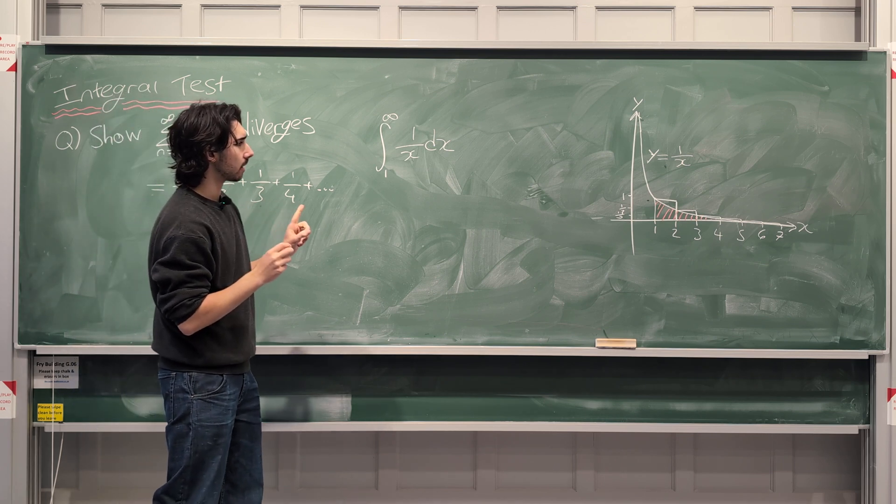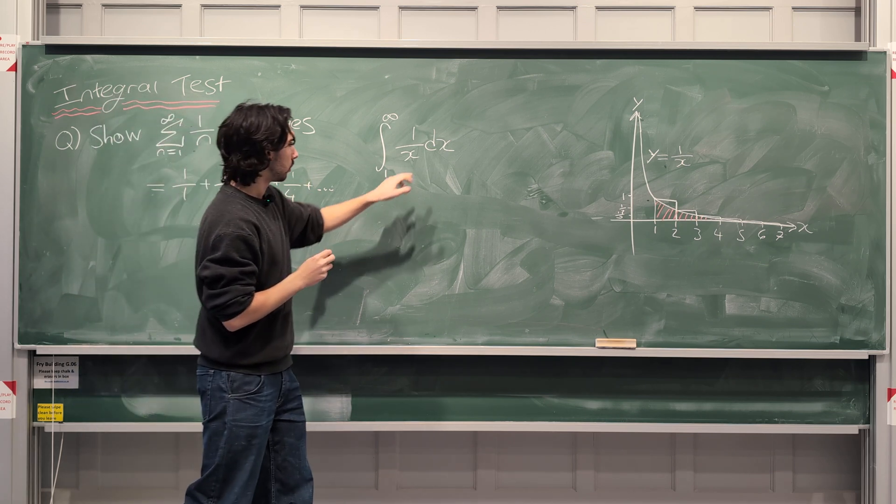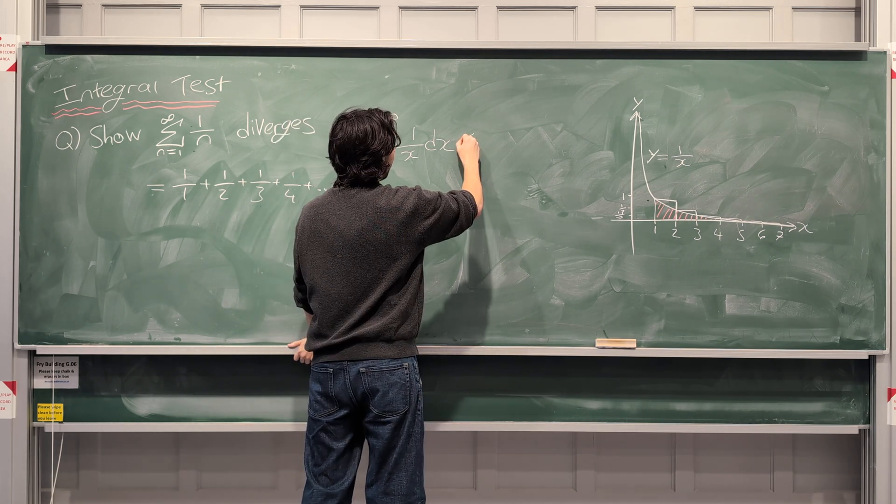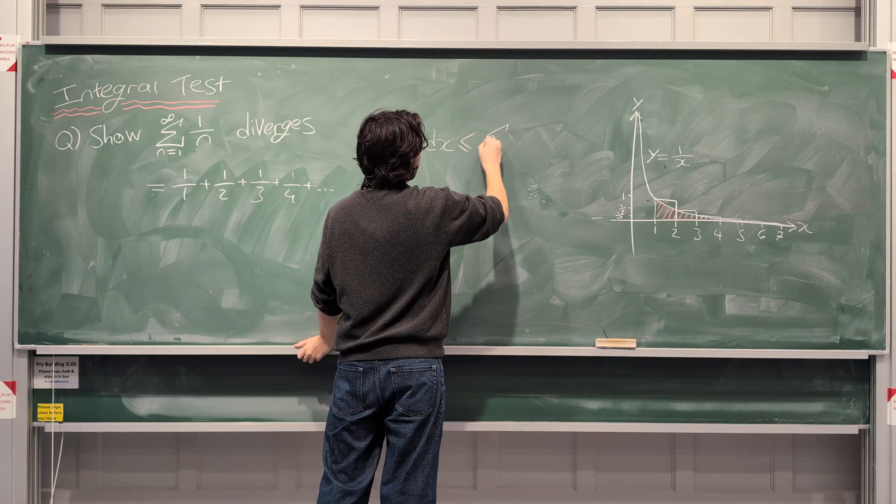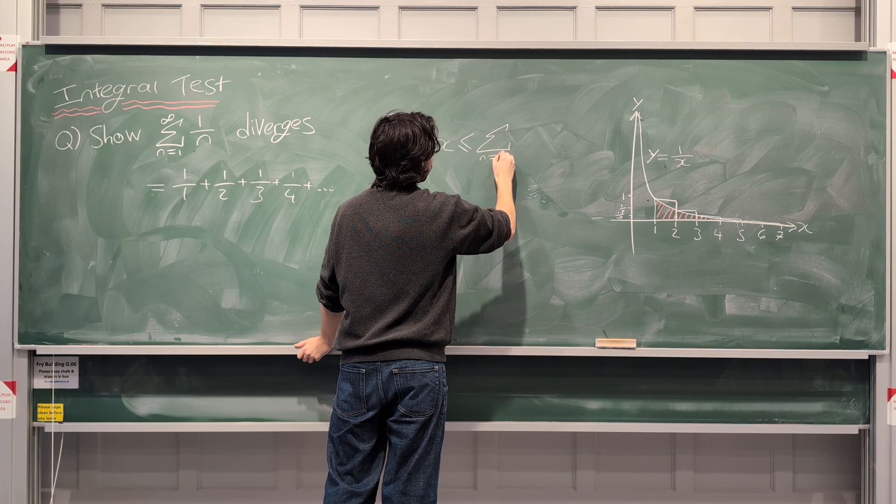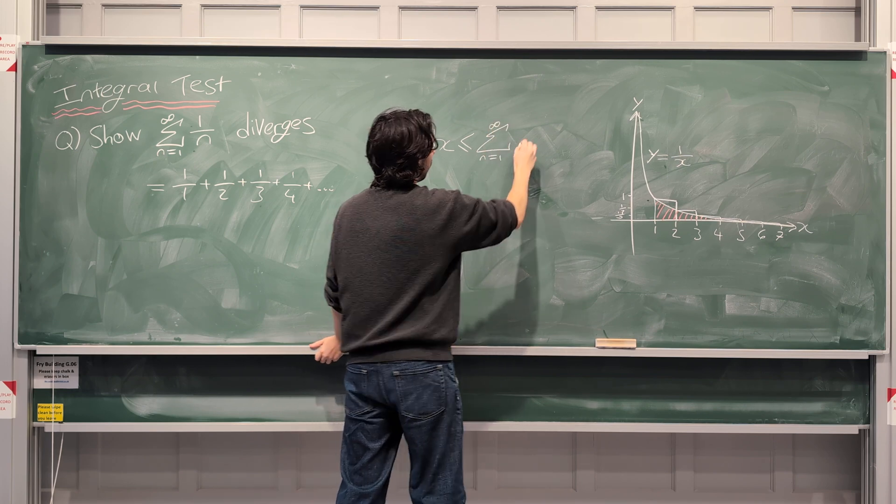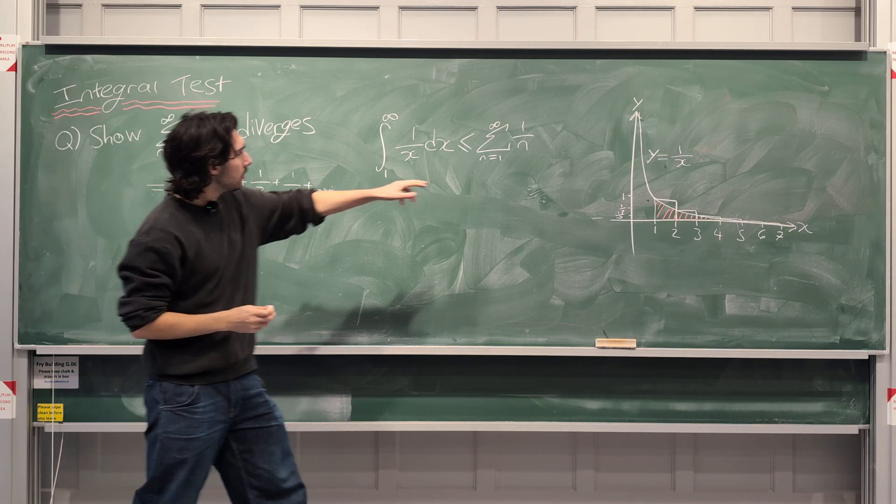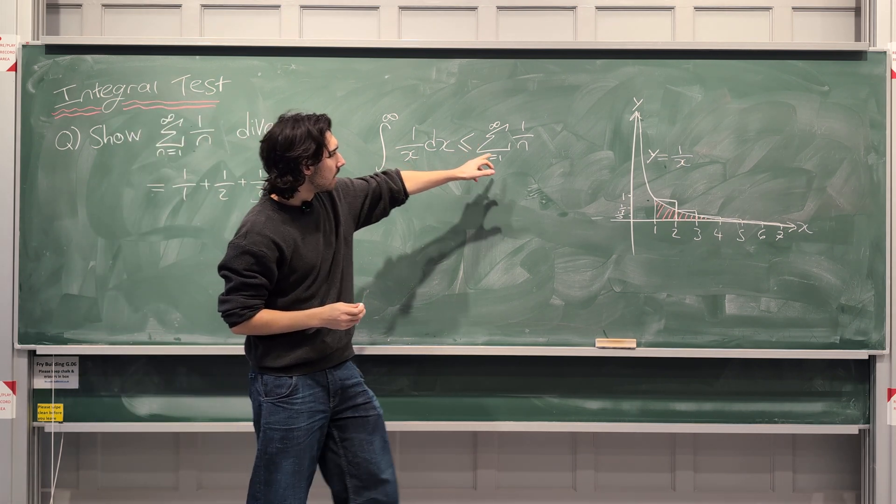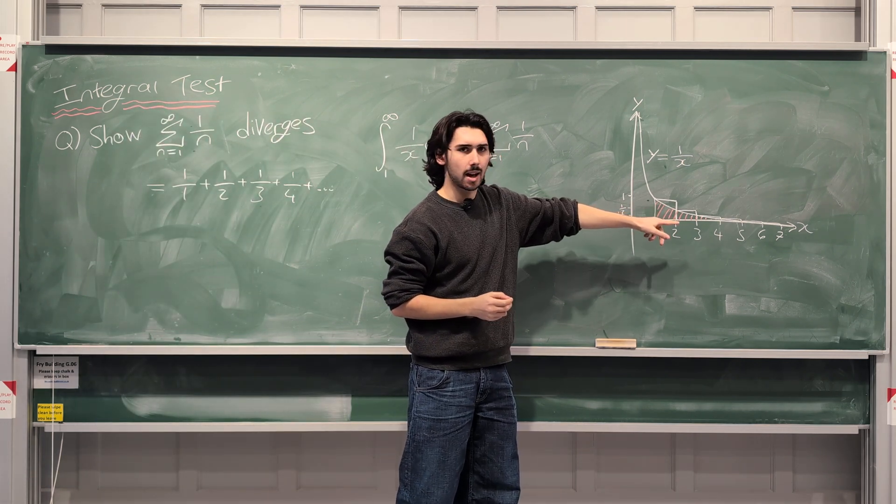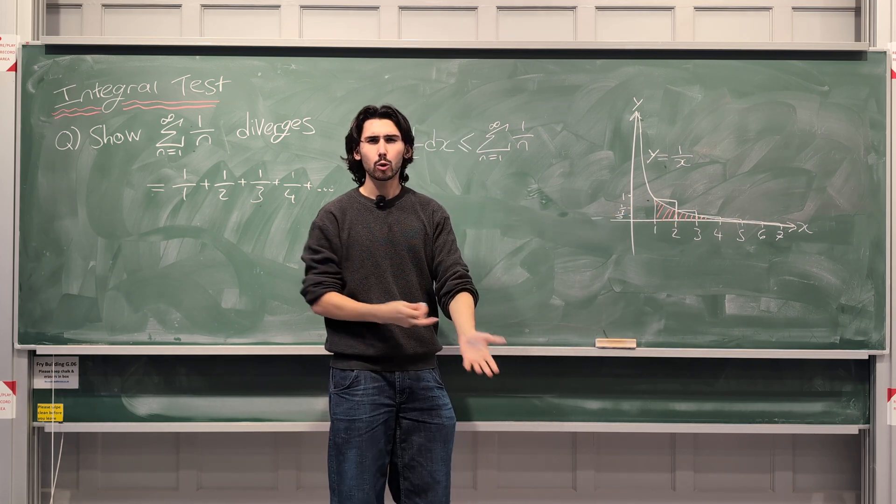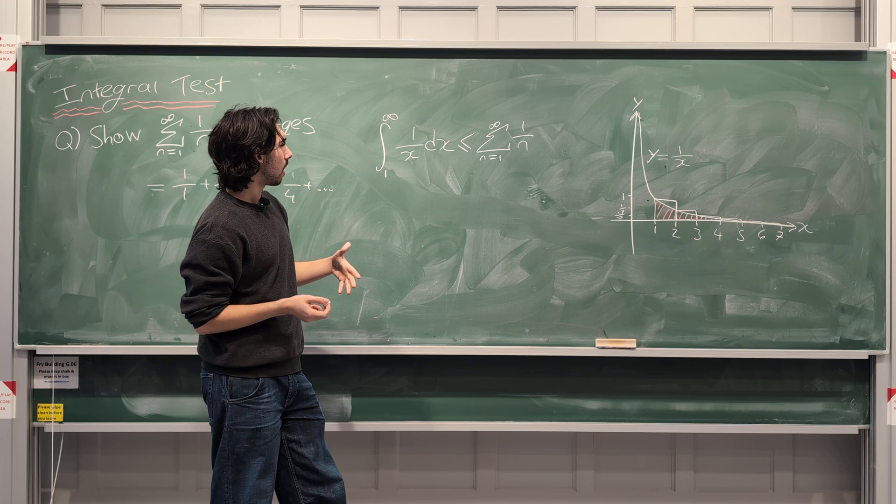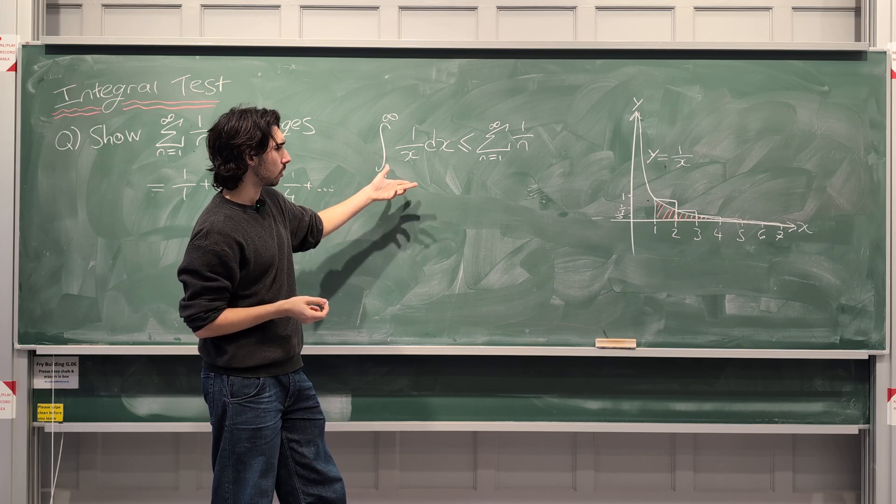But can we just notice something? Do you agree or disagree that this integral, the value of this integral, is clearly less than or equal to the sum from, again, n equals 1 to infinity of 1 over n. Can we say that? Because, guys, the sum from n equals 1 to infinity of 1 over n is the area of all the rectangles. But do you see that the area of all the rectangles is clearly bigger than the area underneath the graph, the integral? Clearly.